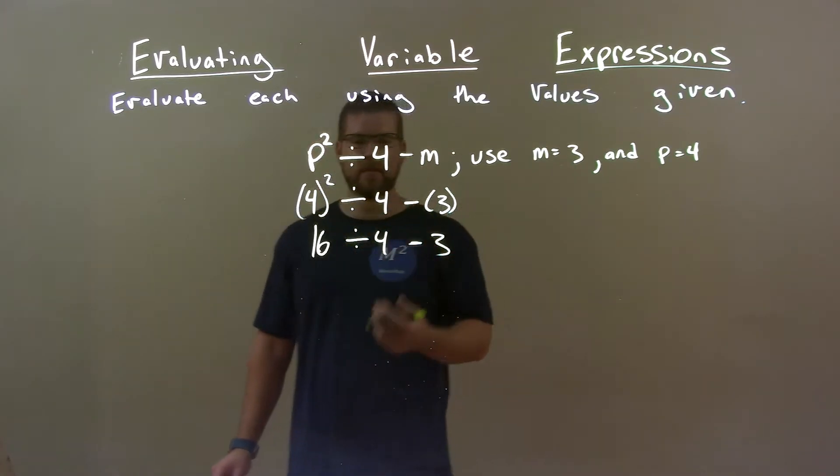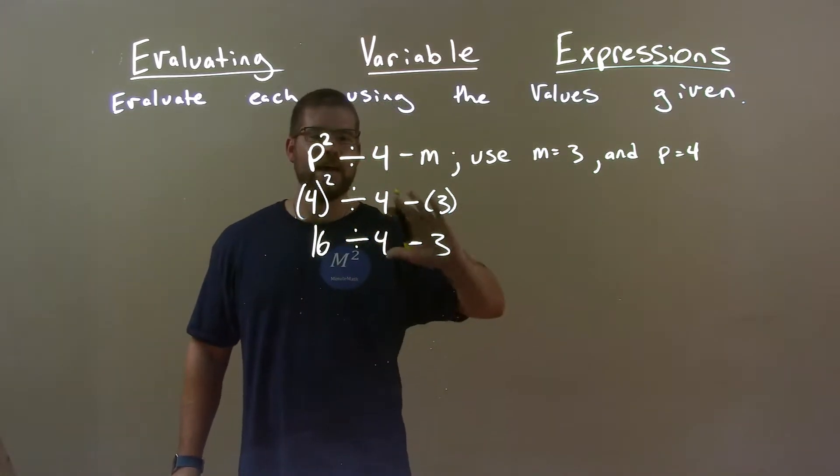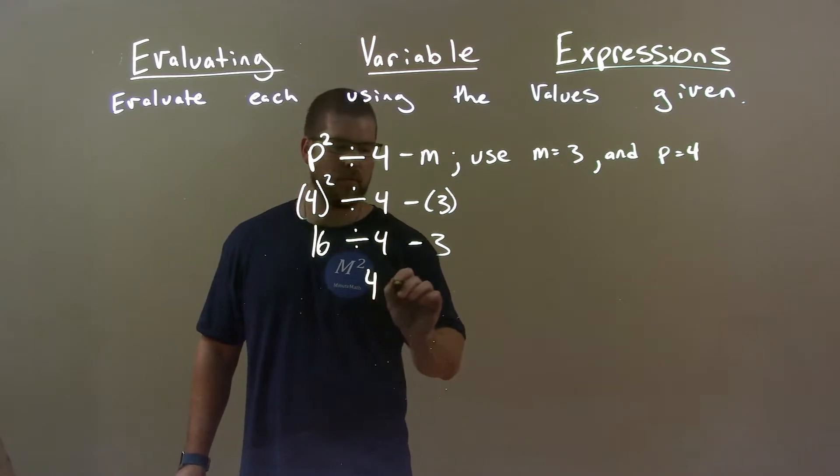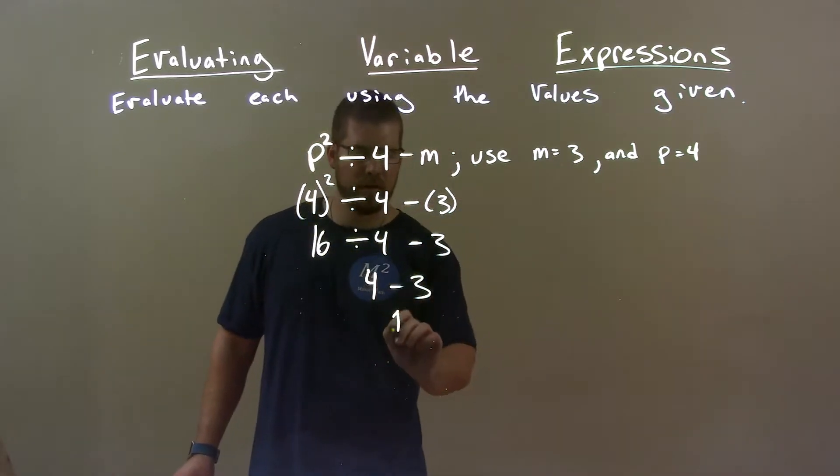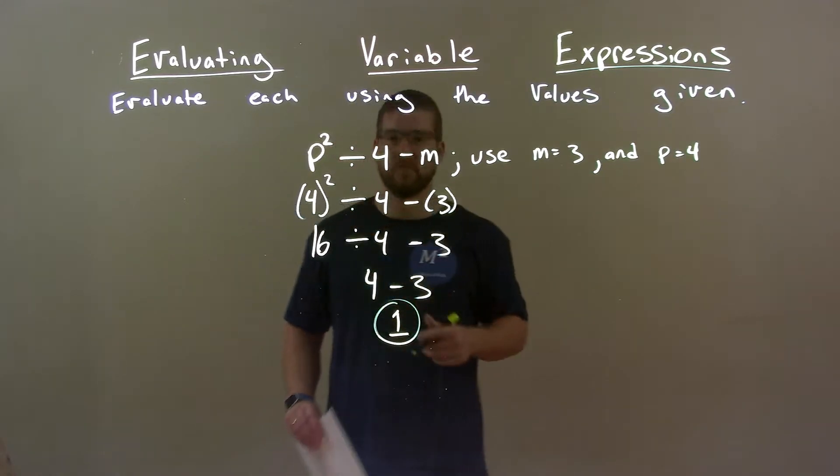Now, divisions are next step. 16 divided by 4 is bringing it back to 4. 4 is minus 3 and 4 minus 3 is just 1. So, final answer here is just 1.